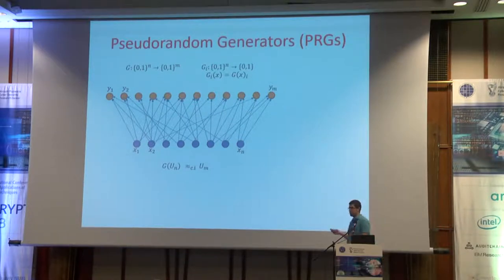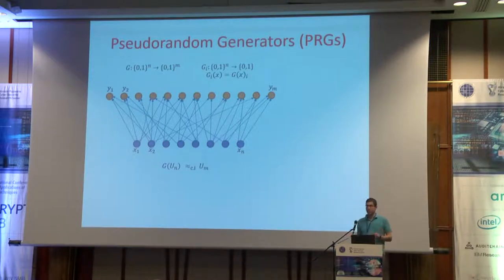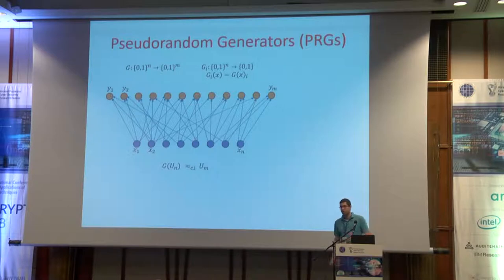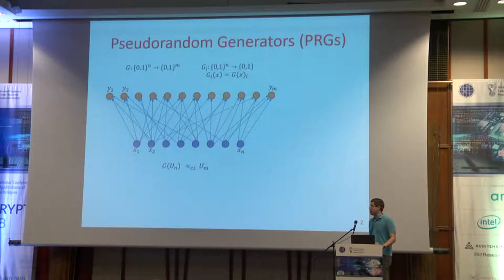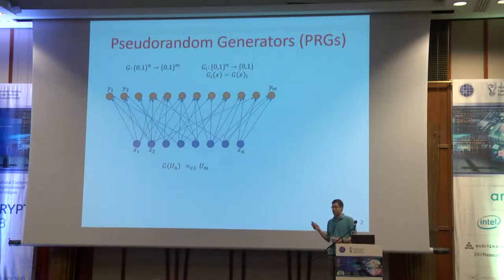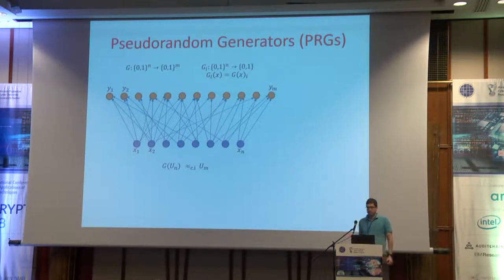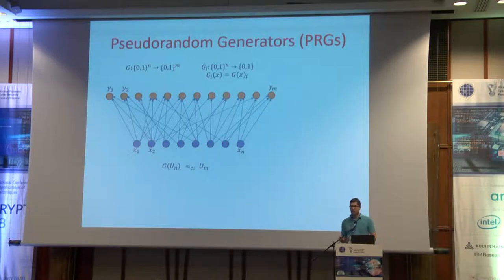A PRG is a function that expands n bits to m bits. We will denote it by G, so G goes from n to m. It's convenient for this talk to think about each output bit as a function. G_i will be the function that gets the n bits in the input and outputs a single bit, 0 or 1. So G_i goes from n to 1, and G goes from n to m, and it's a collection of m functions G_i.